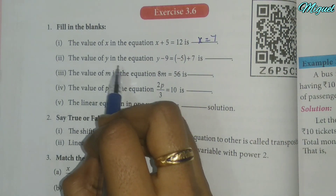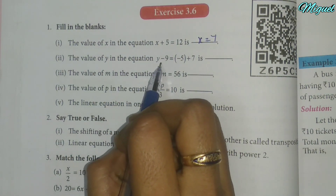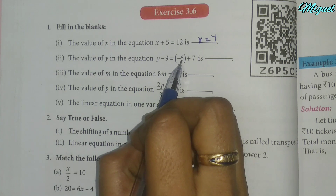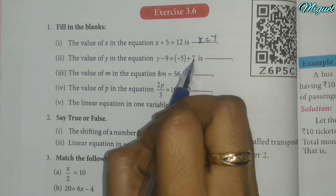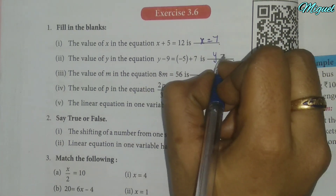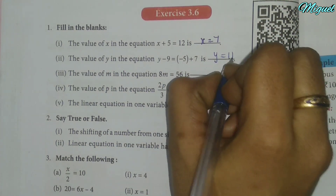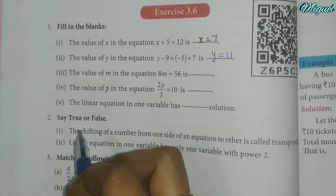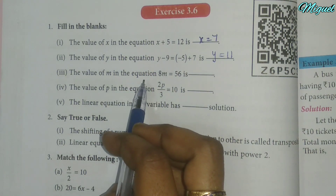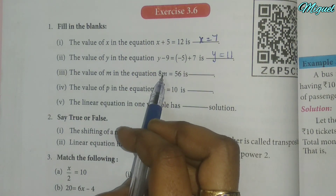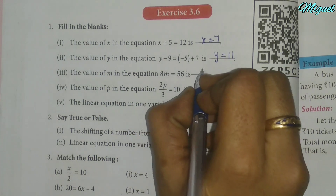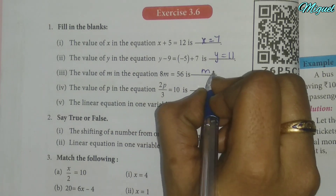The value of y in the equation y minus 9 equal to minus 5 plus 7 is y equal to 11. The value of m in the equation 8m equals 56 is m equal to 7.